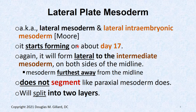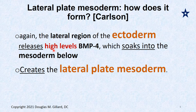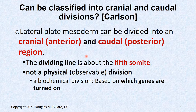It forms on both sides of the body. It does not segment, though we'll talk about how paraxial mesoderm segments. It doesn't clump, but it does split into two layers. How does it form? The lateral region of the ectoderm releases high levels of BMP which soak into the mesoderm cells below, and high levels of BMP exposure cause it to morph into lateral plate mesoderm.